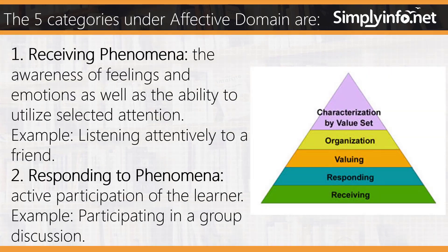Number one: receiving phenomena — the awareness of feelings and emotions, as well as the ability to utilize selected attention. Example: listening attentively to a friend. Number two: responding to phenomena — active participation of the learner. Example: participation in group discussion.